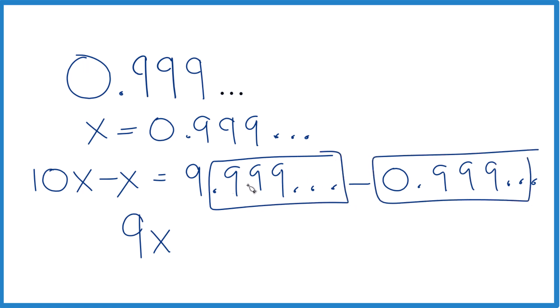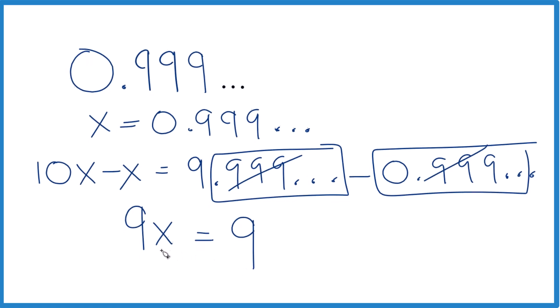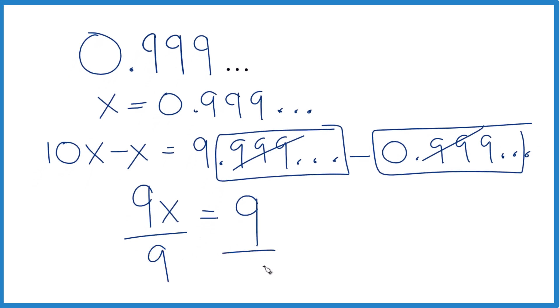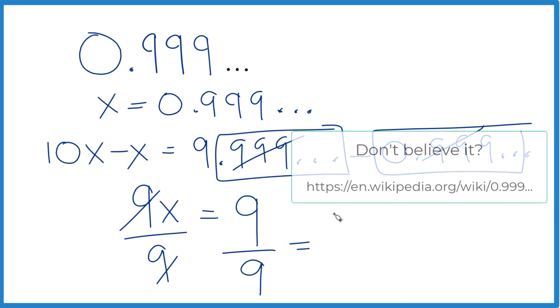So when we subtract, we end up with 0, and we have 9x equals 9. Divide by 9 on both sides here. 9 over 9 is 1, so x equals 1. So that's how you do it. This is Dr. B. Thanks for watching.